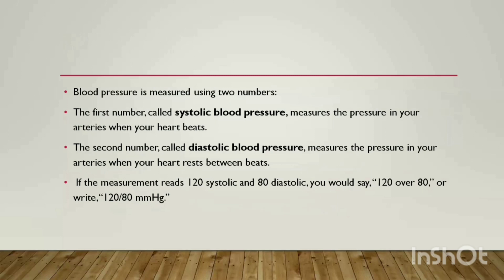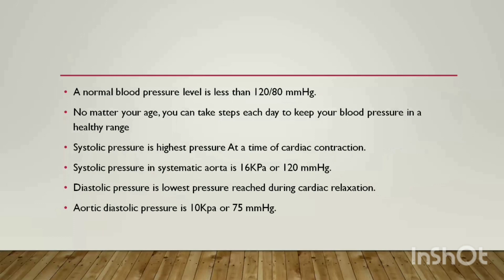Blood pressure is divided into two categories: systolic blood pressure and diastolic blood pressure. Systolic blood pressure is the pressure in arteries when the heart beats. Diastolic blood pressure is the pressure in arteries when the heart relaxes. When the heart beats, the pressure is systolic; when the heart relaxes, the pressure is diastolic. The systolic pressure is basically 120 mmHg and diastolic is 80 mmHg, which is normal blood pressure: 120/80 mmHg.